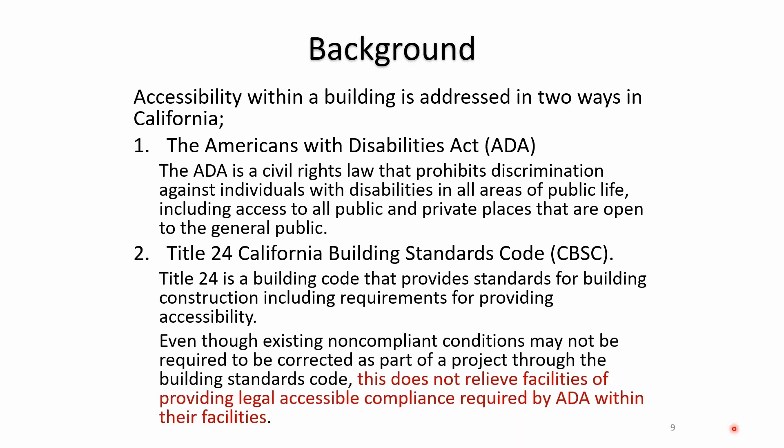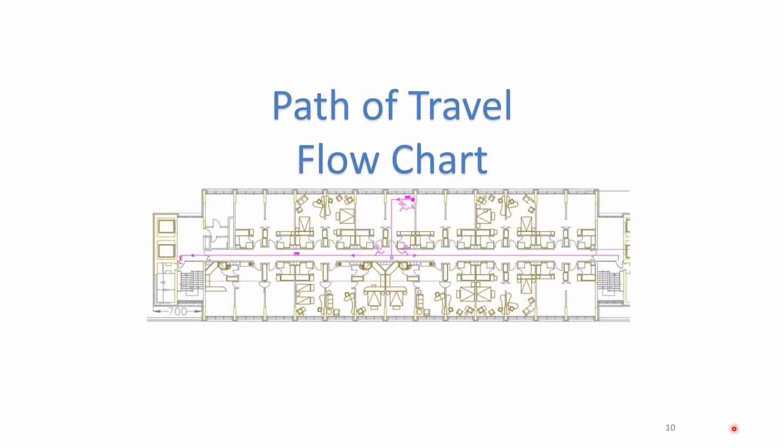Even though existing noncompliant conditions may not be required to be corrected as part of a project, this does not relieve the facility from providing legal accessibility compliance required by the ADA. All owners are currently responsible to have full compliance. Chapter 11B provides guidance to make spaces accessible and helps make non-accessible conditions more accessible, triggered by projects and construction. Even if a project may not require a certain thing to be brought into compliance, the owner is still liable for having that in compliance.